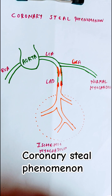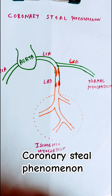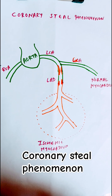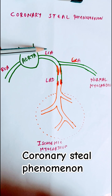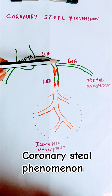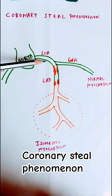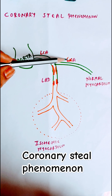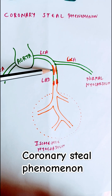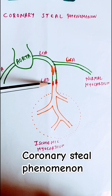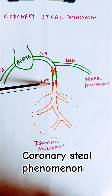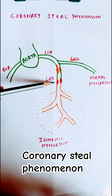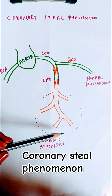Let's talk about coronary steal phenomenon. In this diagram you can see the aorta and its branches — the right coronary artery and the left coronary artery. The left coronary artery further divides into the left anterior descending artery and the circumflex artery. Notice the atherosclerotic plaque in the left anterior descending artery.